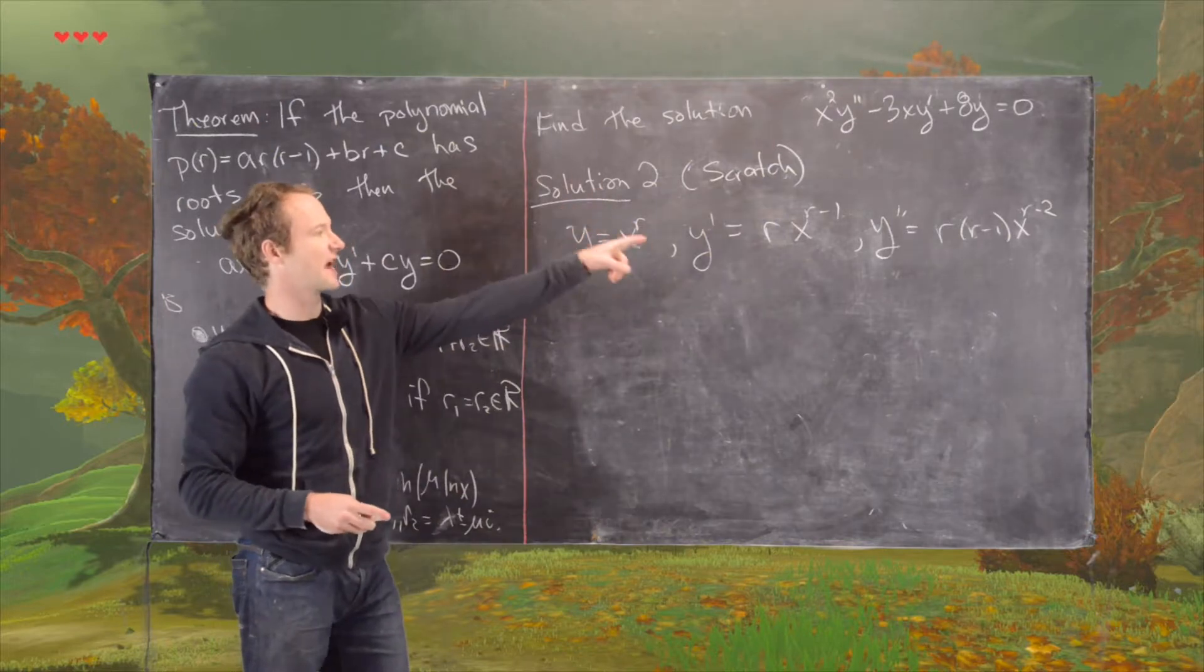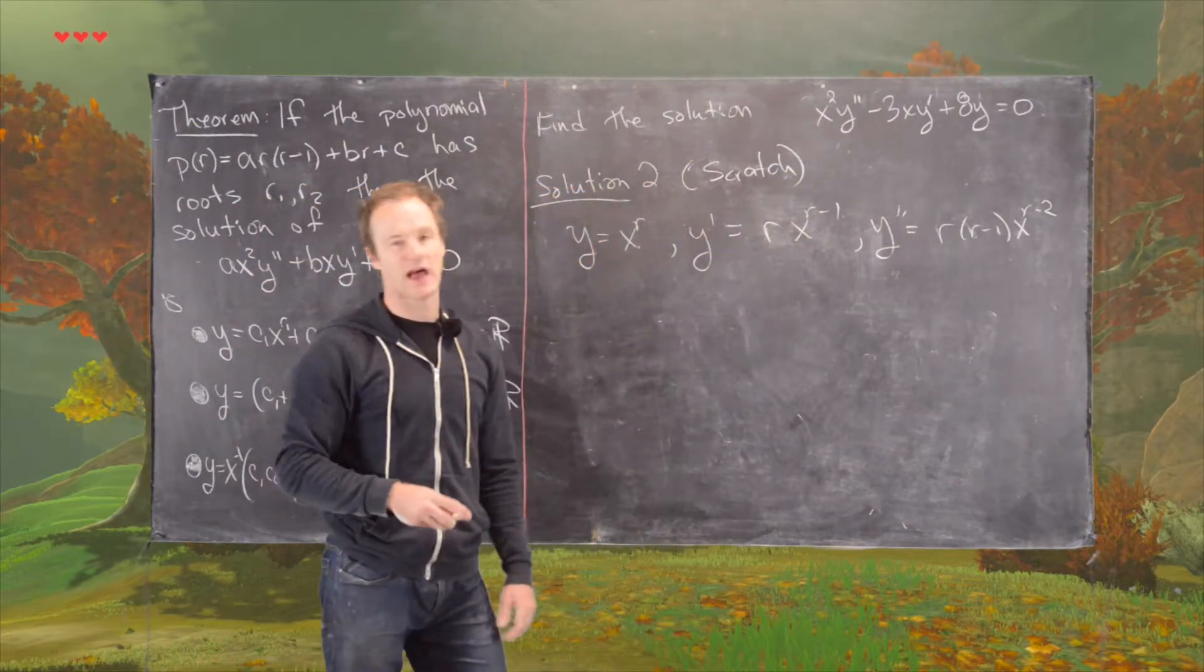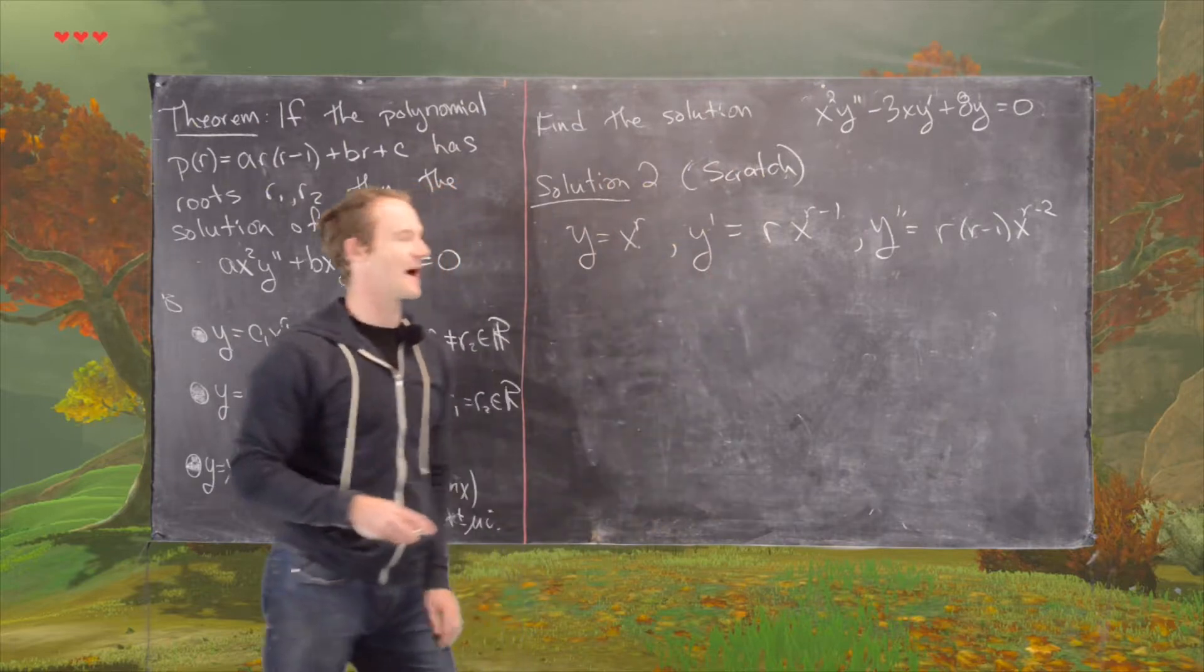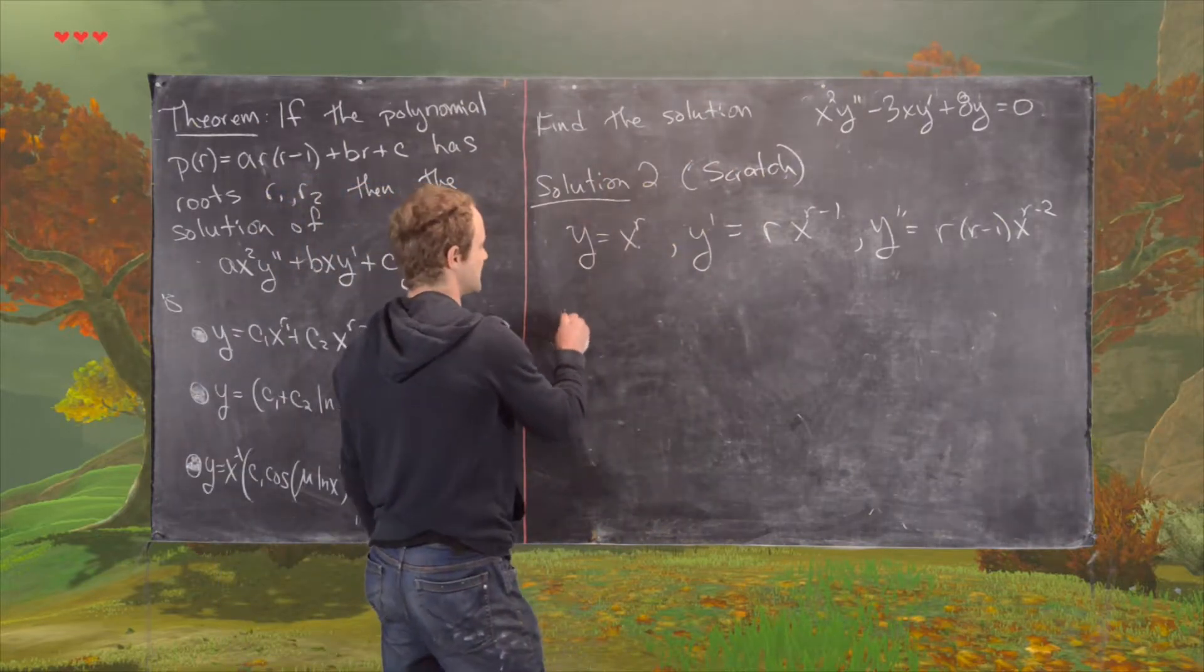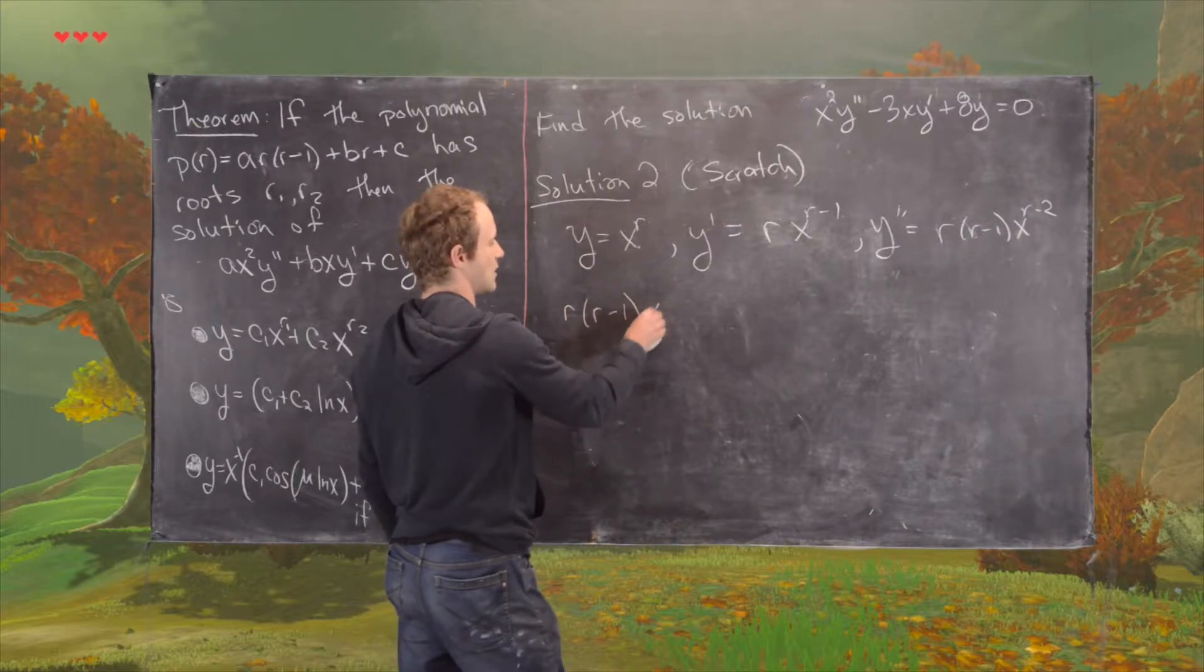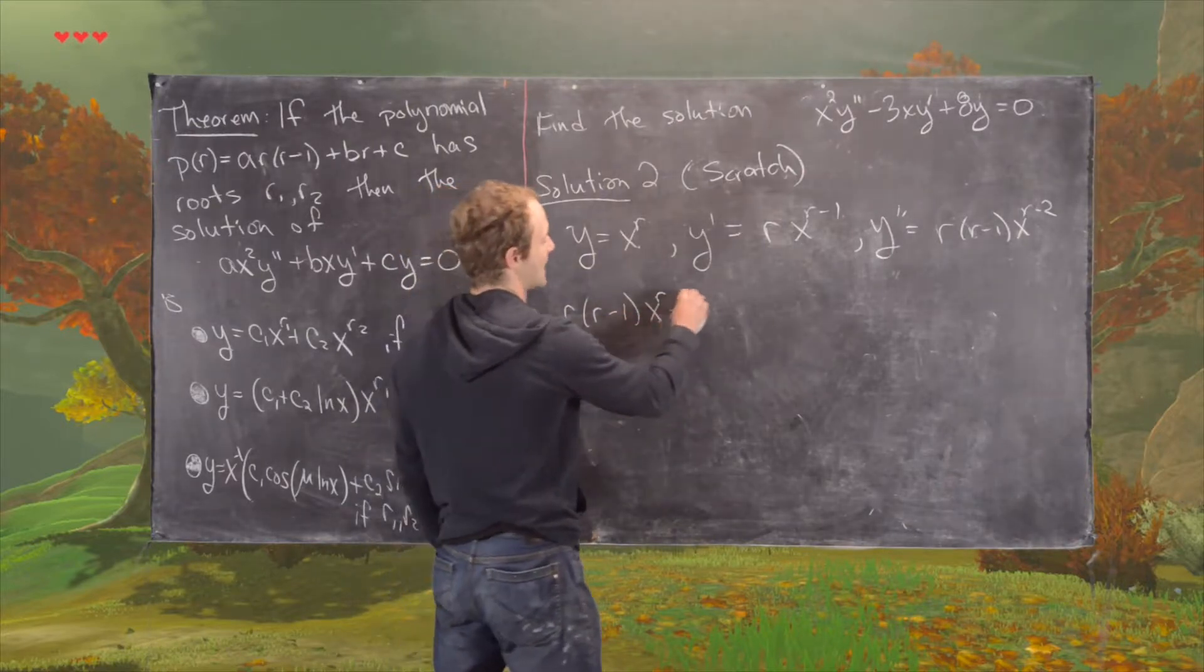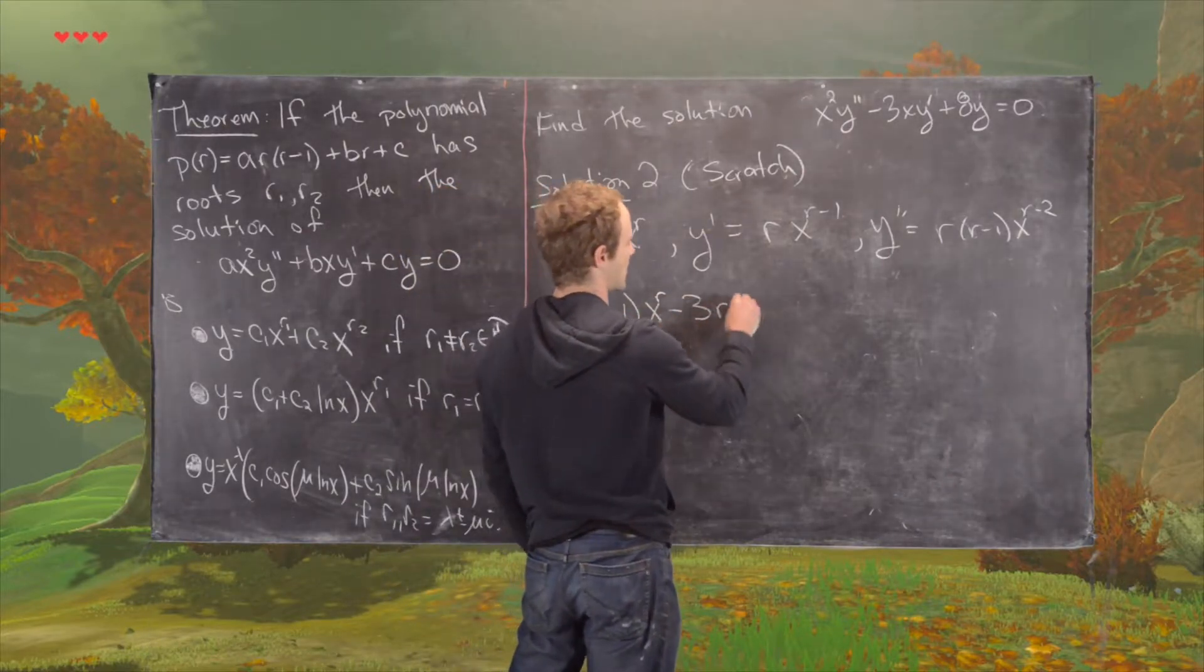We'll see that the x squared will build this power back up to x to the r, and x will build that back up to x to the r as well. So we have r times r minus 1 x to the r minus 3 times r x to the r,